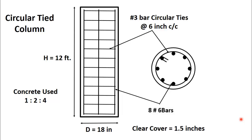Today we have selected an example of a circular tied column. According to the given drawing, the total height of the circular column is 12 feet, the diameter is 18 inches, and the clear cover provided is 1.5 inches. Concrete used is 1:2:4. Details of the reinforcement can be obtained by studying the cross section of the column. Transverse reinforcement is provided in the form of number 3 bar circular ties at the rate of 6 inches center to center, and longitudinal reinforcement is provided in the form of 8 number 6 bars.